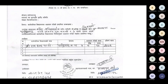As shown above, in the first section you will need to write your mother's name. You also need to write it clearly. Then write the name of the district you are from, which municipality or rural municipality, the ward number, and the name of the local area.